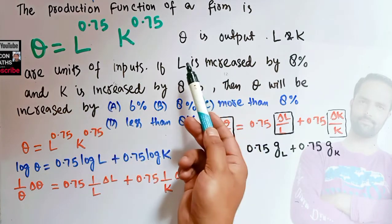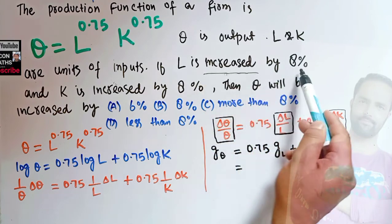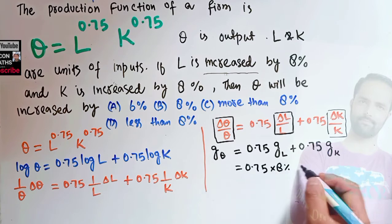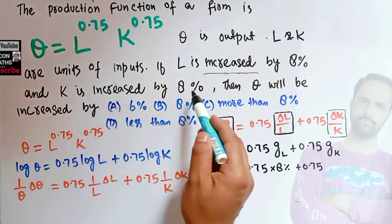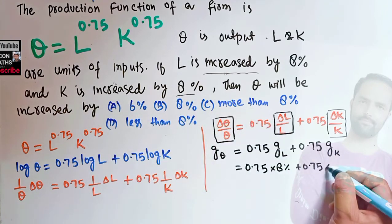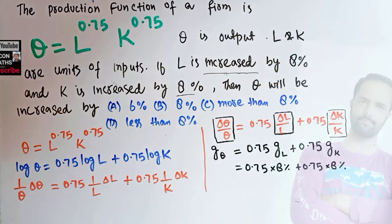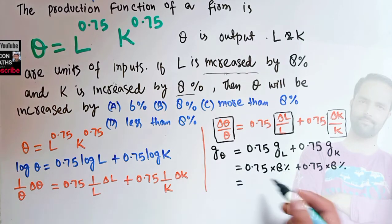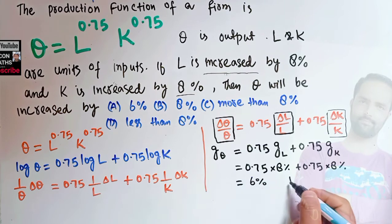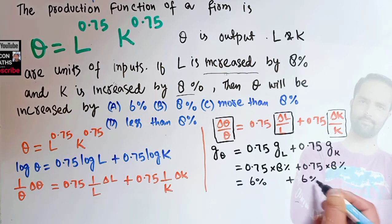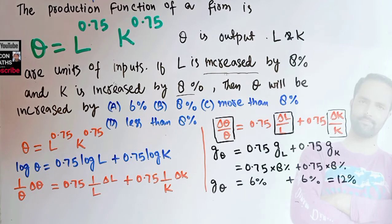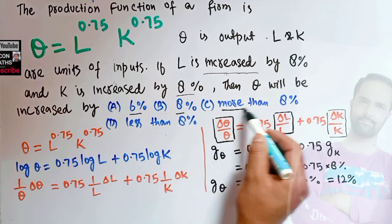We are told the growth rate of labor is 8%, so: G_Q = 0.75 × 8% + 0.75 × 8% — since capital is also increased by 8%. That gives us 6% + 6% = 12%. So the growth rate of output will be 12%, meaning output will increase by 12%.